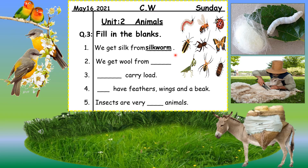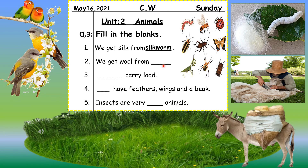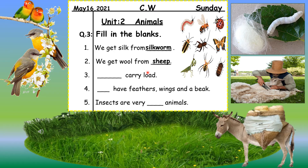Number two: 'We get wool from ___.' You have read about wool in your science Unit 2 Animals. From where do we get wool? From sheep. Sheep give us wool to make woolen clothes that keep us warm in winter season.